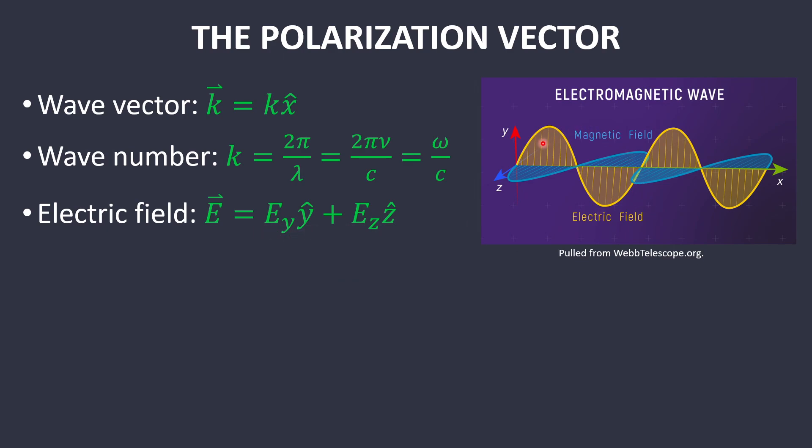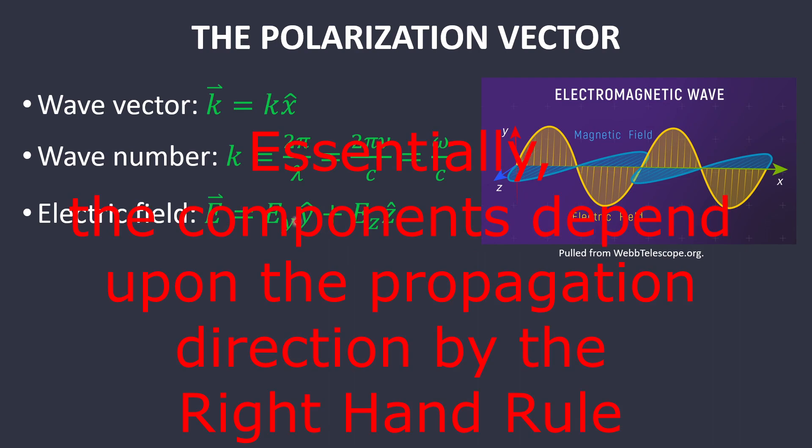The electric field can be represented as components in the y-direction and components in the z-direction. In general, you can have an electric field that has components in both directions if it's propagating in the x-direction. If it's propagating in the z-direction, then it would have components in the x and y-direction.